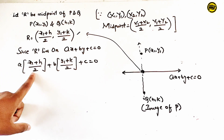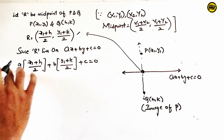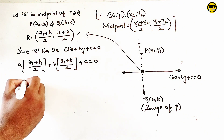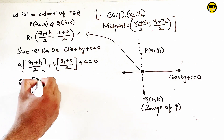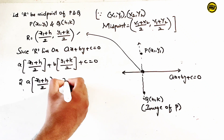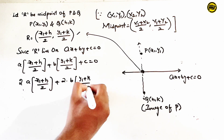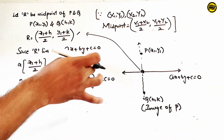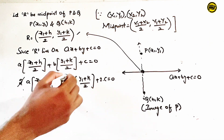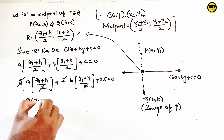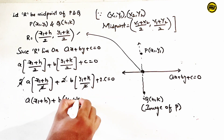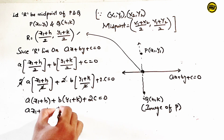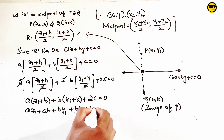Substituting the midpoint into the line equation and multiplying through by 2: 2 into a into x1 plus h by 2 plus 2 into b into y1 plus k by 2 plus 2c equals 0. Cancelling the 2s, we get a into x1 plus h plus b into y1 plus k plus 2c equals 0, which expands to ax1 plus ah plus by1 plus bk plus 2c equals 0.